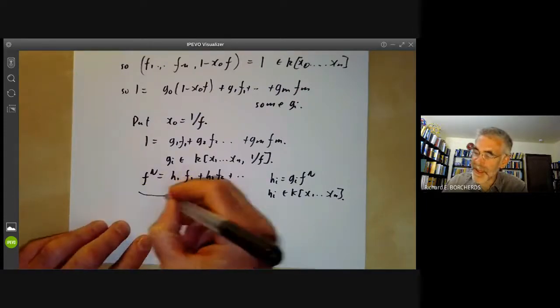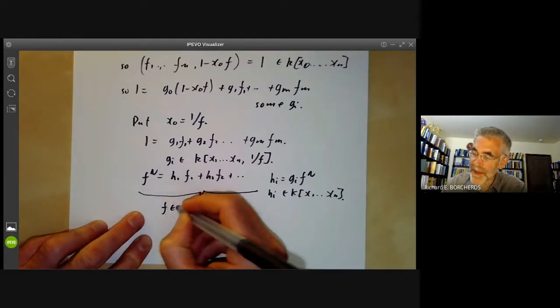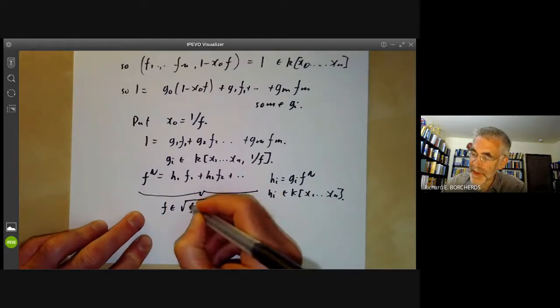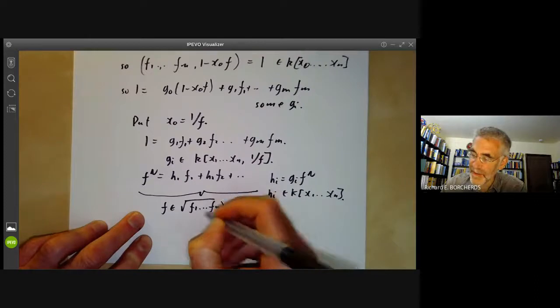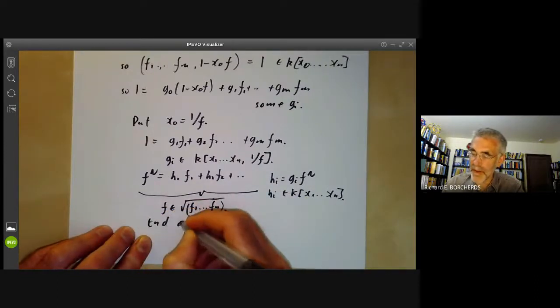Well, this just says that f is in the radical of the ideal generated by f1 up to fn, which was what we wanted to prove. So this is the end of the proof.